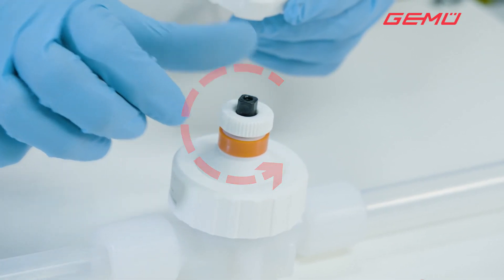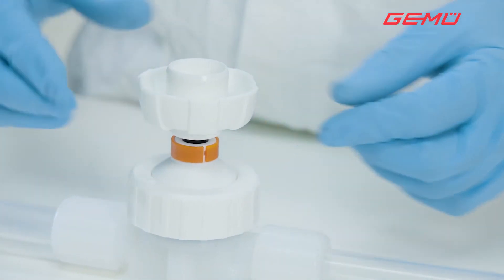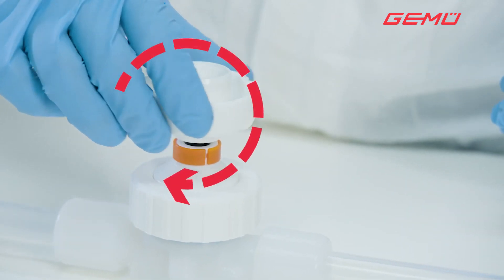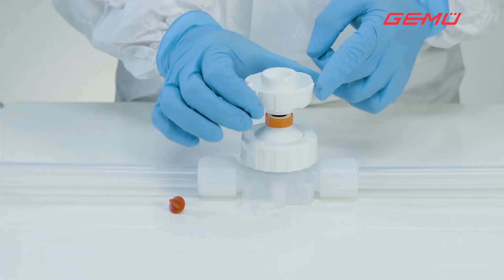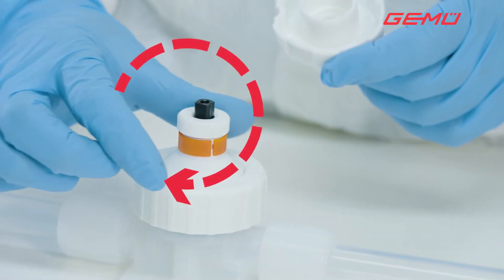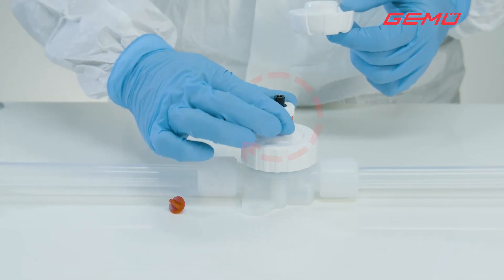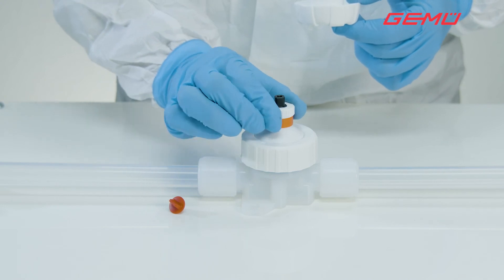Position the handwheel the other way around on the threaded spindle and close the valve by turning clockwise until considerable resistance can be felt. Then remove the handwheel again and tighten the knurled screw clockwise and downwards as far as it will go.